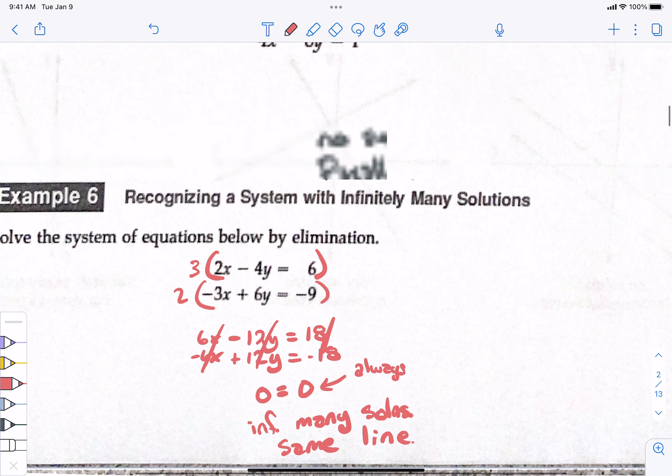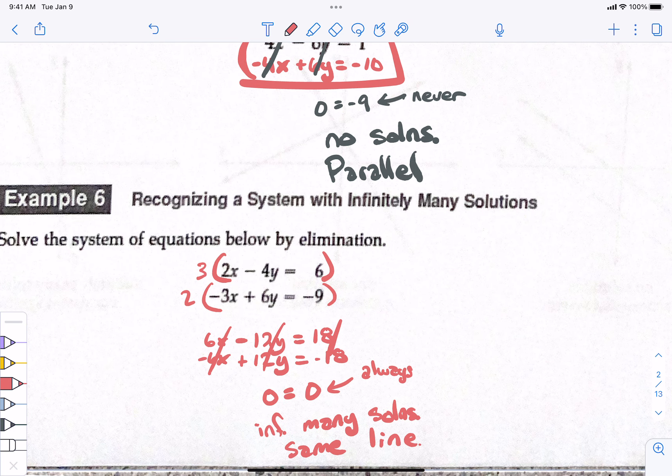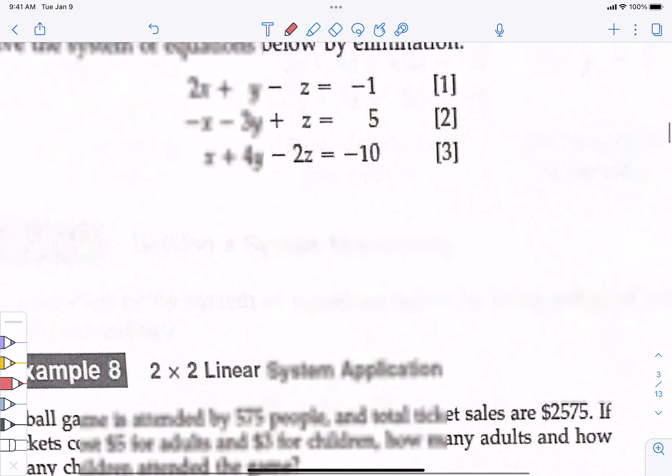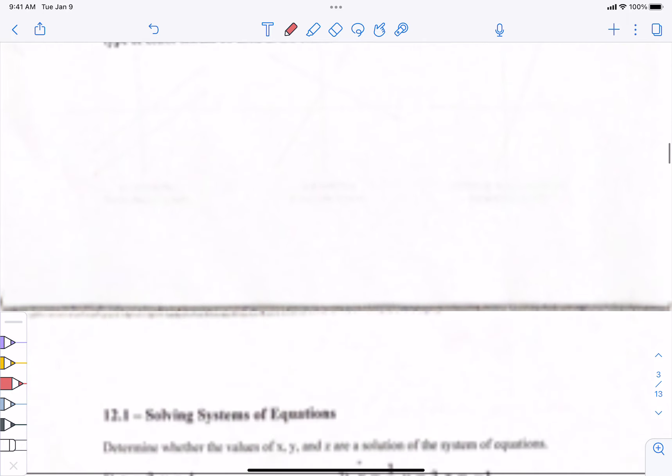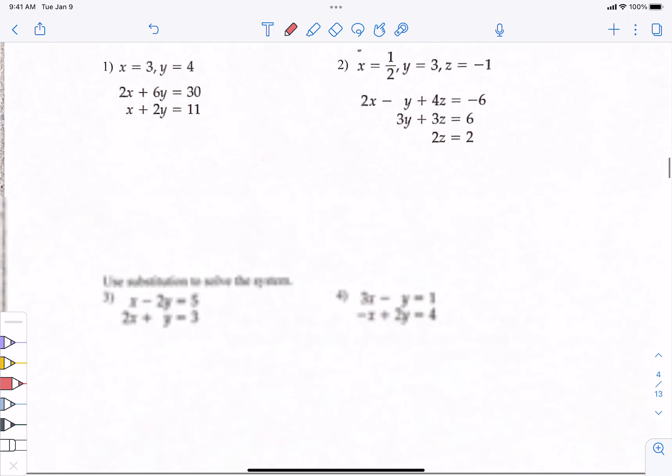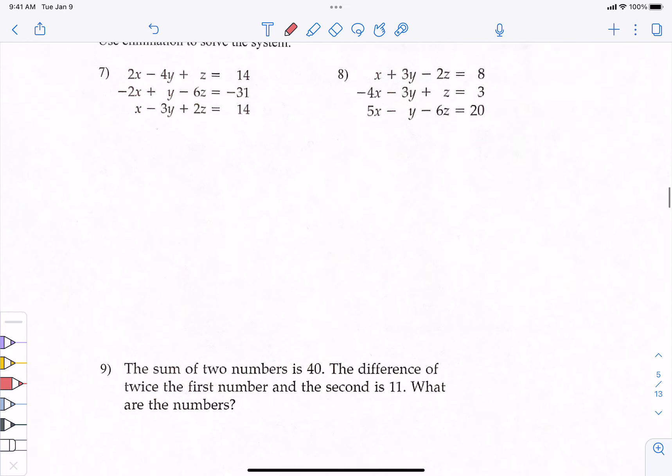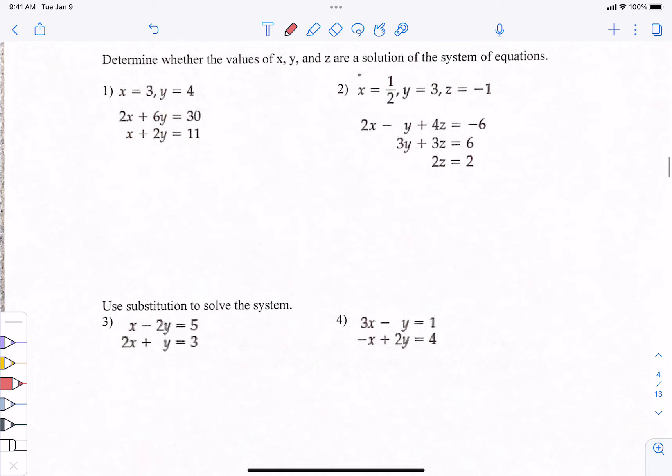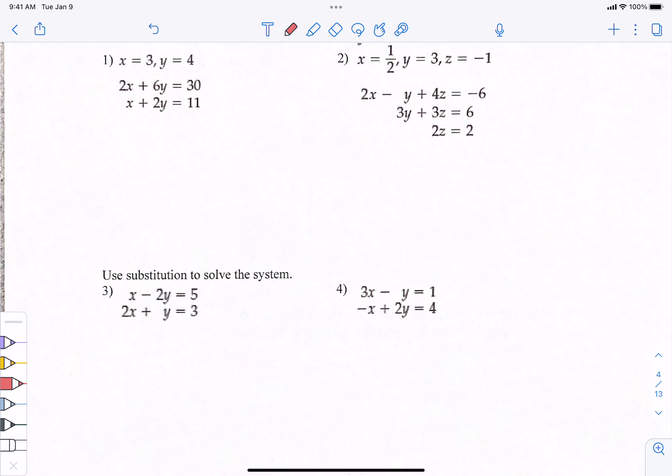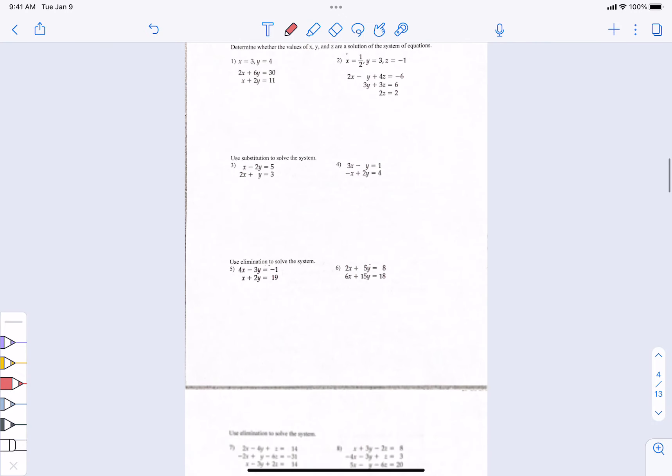We will stop. If you will work under the condition that you work, tomorrow we'll do the 3x3. Use your time to work. You can do all of these except the last 3 or 4. Do them. Make sure that you are using substitution when I tell you to use substitution. How do I do elimination? I make them one of the same. You multiply one equation by something, whatever.